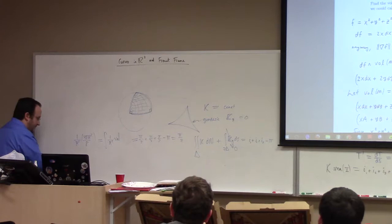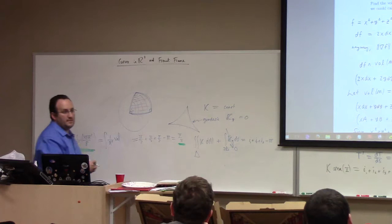That triangle is one-eighth of the whole sphere. So the area is 4 pi r squared over 8 = pi r squared over 2. And 1/r squared times pi r squared/2 = pi/2. Check that out — it works!